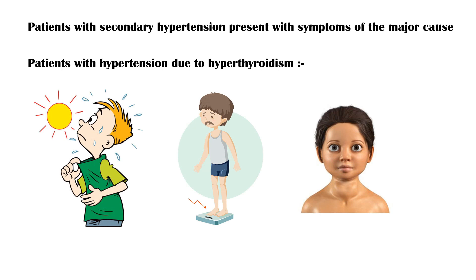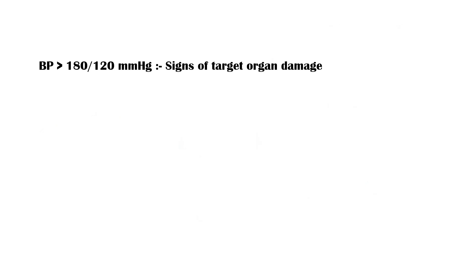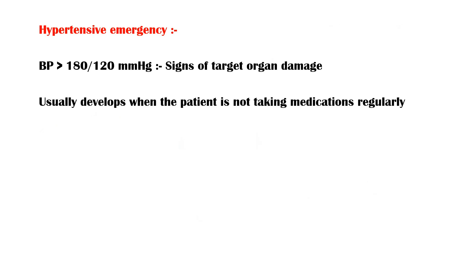Only a small subset of patients with significantly elevated blood pressure, usually more than 180 systolic and 120 diastolic, may have signs and symptoms of target organ damage. This is known as hypertensive emergency. This condition usually develops when the patient does not take antihypertensive medications regularly.